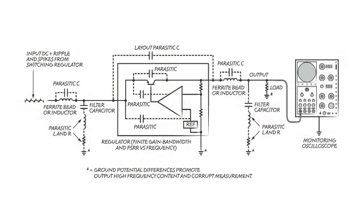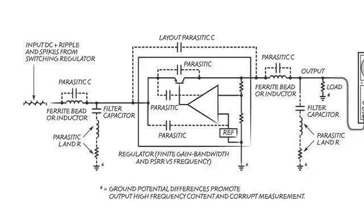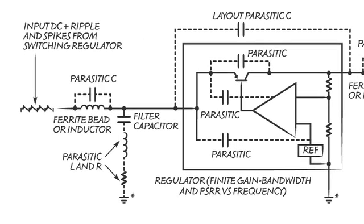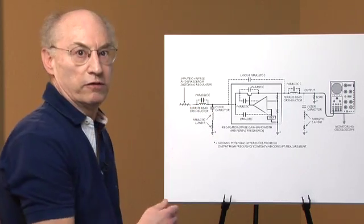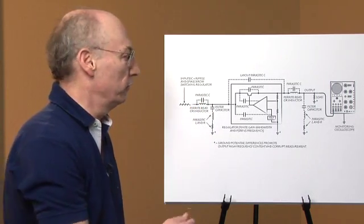Let's take a look at the first slide in greater detail. First of all, the filtering components have parasitics of their own, series inductance and resistance. Even if you use a series inductor to make the filter capacitor more effective, the parasitic shunt capacitance defeats the purpose of the inductor at high frequency.